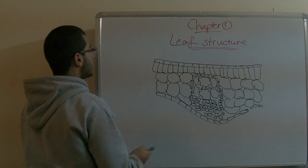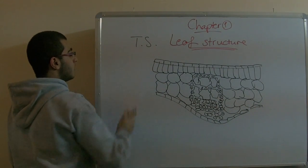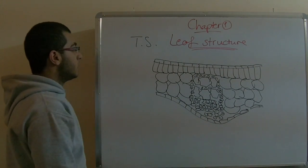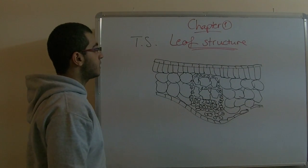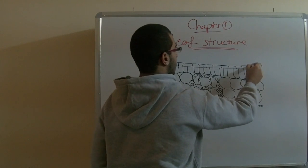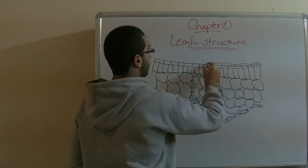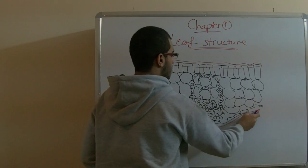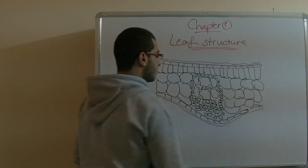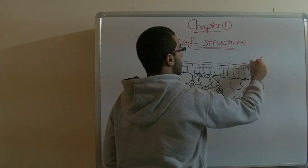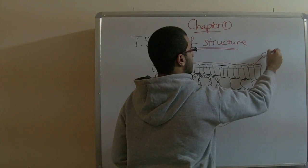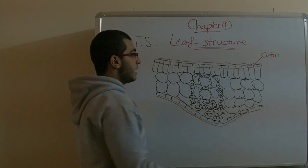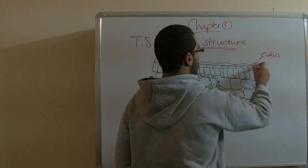This is a transversal section showing the leaf blade. The first thing in the structure of the leaf blade is this layer which covers the upper and lower surface of the leaf. This layer is called cuticle. As we mentioned before, it's an impermeable layer.